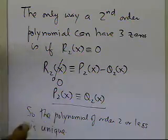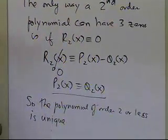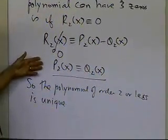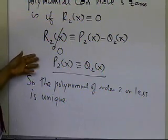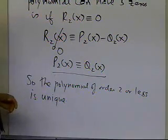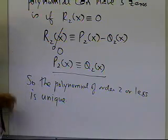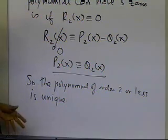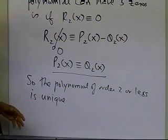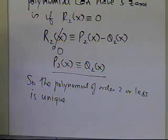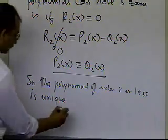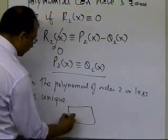I can extend this argument to any number of data points. I showed it specifically for three data points, drawing a second-order or less polynomial through them, but you can extend this to any number of data points — n plus 1 data points — and show that the n-th order polynomial going through those n plus 1 data points is unique. If you follow the same argument, you will come up with the same conclusion. And that's the end of this segment.